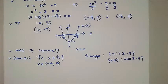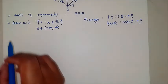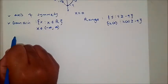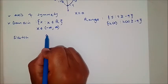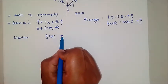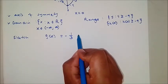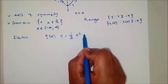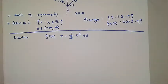That's it for the first question. Now let's look at the second question. We need to sketch g of x equals 1 over 3, minus 1 over 3 x squared plus 3. This is the second function we need to sketch.